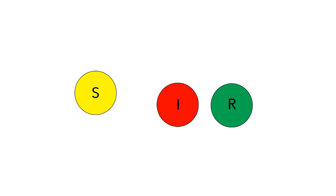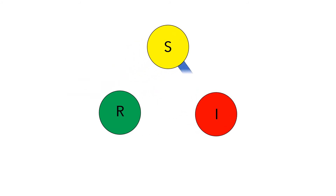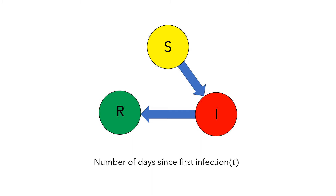We can think about how individuals move from the susceptible group to the infected group, or from the infected to the removed. To help our exploration, I'm going to define four quantities — something you can measure. The four quantities are: T, the number of days since the first infection; and S, the number of people in the susceptible population, which changes each day, written in function notation as S(T).